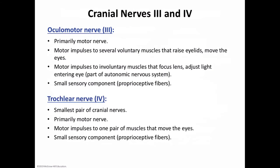Cranial nerve number three is the oculomotor nerve. It arises from the midbrain and passes into the orbits of the eyes. One component connects to the voluntary muscles, including those that raise the eyelids and four of the six muscles that move the eye — four of the six extrinsic eye muscles. The second portion is part of the autonomic nervous system, supplying the involuntary muscles inside the eyes that help adjust the amount of light entering the eye and help focus the lenses. This nerve is considered motor with some proprioceptive fibers.